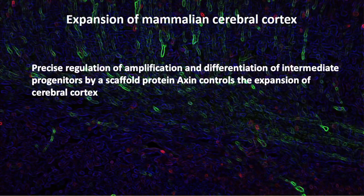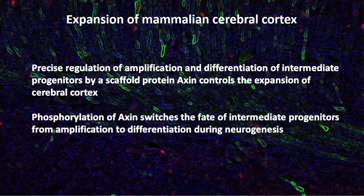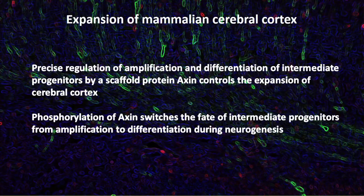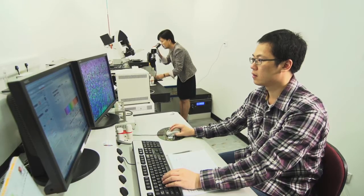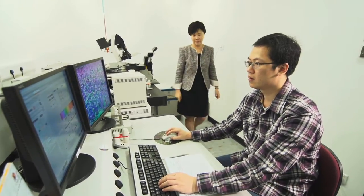We made the important discovery that precise regulation of the amplification and differentiation of intermediate progenitors by a scaffold protein, axin, controls the expansion of the cerebral cortex. Importantly, the phosphorylation of axin switches the fate of intermediate progenitors from amplification to differentiation during neurogenesis. Axin is considered a master scaffold for various signaling pathways that are implicated in neurogenesis.